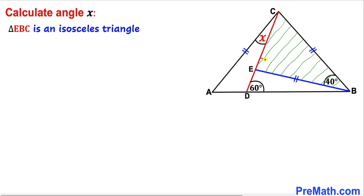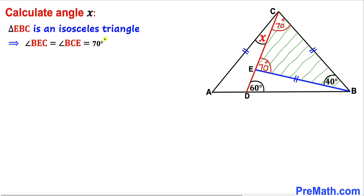Therefore this angle has got to be equal to this angle, and we know this is a 40 degrees angle. We know that the sum of the angles in a triangle must be 180 degrees, so therefore this angle has got to be 70 degrees and this angle is 70 degrees as well, such that all three angles add up to 180 degrees. Therefore our angles BEC and BCE are 70 degrees each.